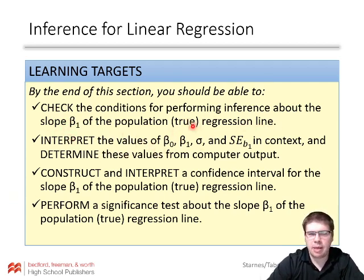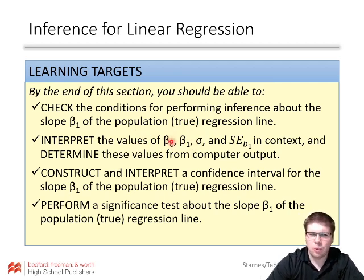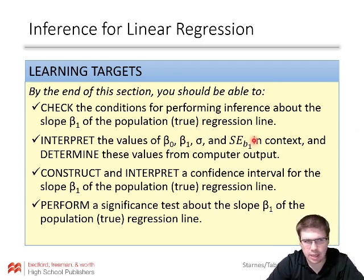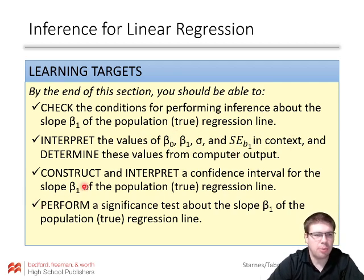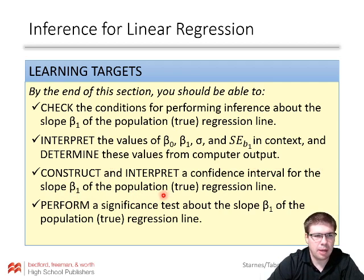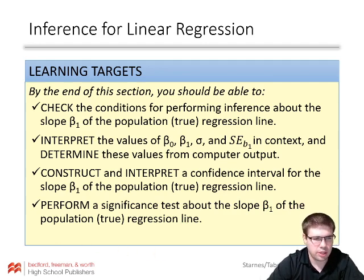You'll also interpret the values of beta naught, beta 1, sigma, and SE sub B1 in context, determine these values from computer output, construct and interpret a confidence interval for the slope beta sub 1 of the population regression line, and perform a significance test about the slope beta sub 1 of the population regression line.